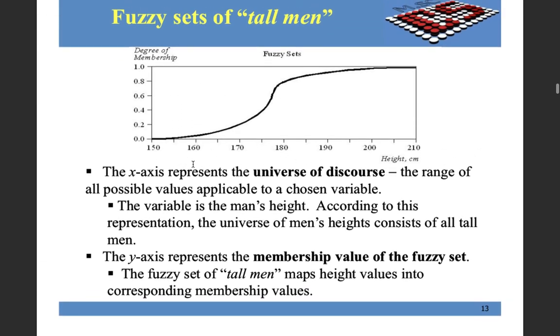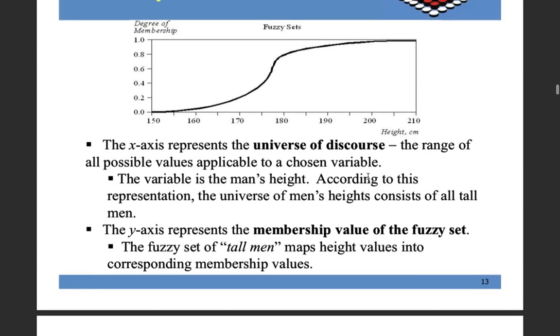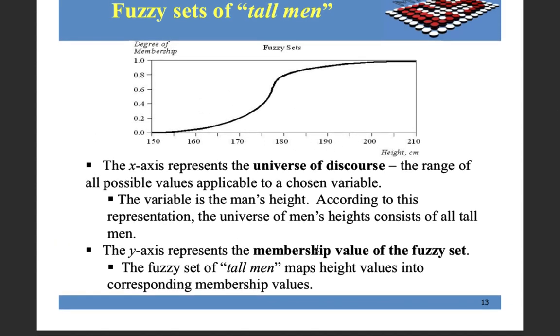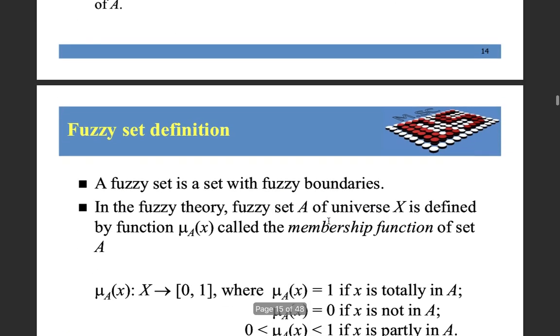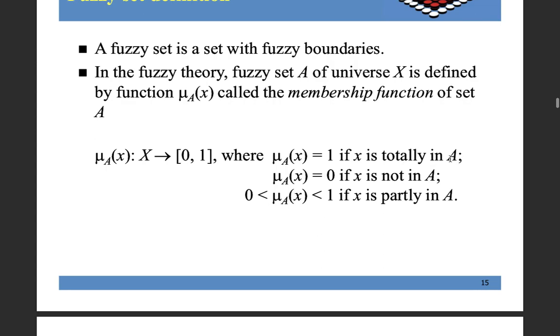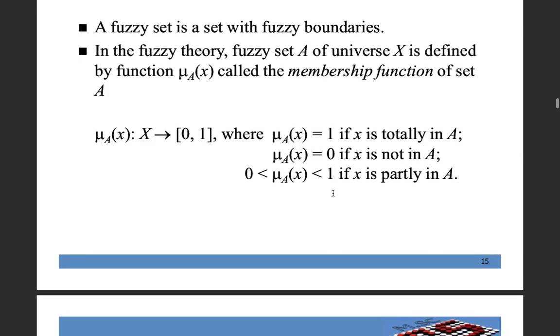So this x-axis represents the universe of discourse. All the input values that can be inserted are on the x-axis and y-axis is membership value for that fuzzy set. According to crisp set definition, if a person belongs to a group, he is assigned value 1. If does not belong to a group, he is assigned value 0. But in fuzzy set, if it is totally in A, membership value is 1. If it's not in group A, then it's assigned membership value 0. And if it's partly in A, then assigned membership value between 0 and 1.